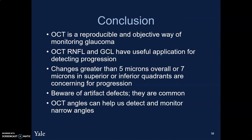In conclusion, OCT is a reproducible and objective way of monitoring glaucoma. OCT RNFL and GCL both have useful applications for detecting progression. Changes greater than 5 microns in the average RNFL or 7 microns in the superior or inferior quadrants can be particularly concerning for progression. You should be very cautious and aware of artifact defects as they are quite common and can cause significant problems. And finally, OCT angles can help us detect and monitor narrow angles and can be useful in terms of explaining to patients.